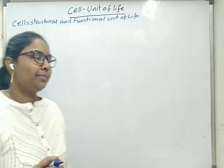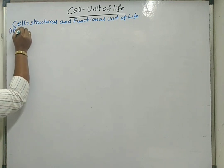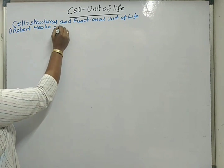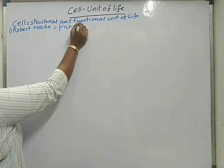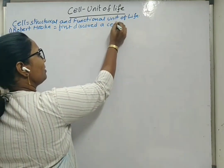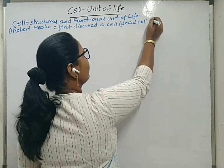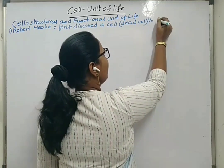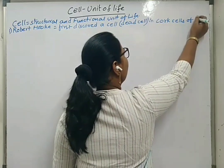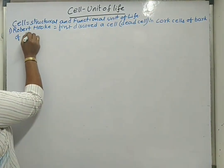The botanical name of the oak tree is Quercus. So the first point we will write is: Robert Hooke first discovered a cell — that cell is a dead cell found in the cork cells of the bark of the oak tree.